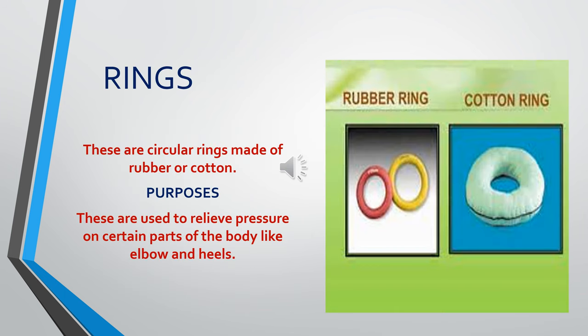Another comfort device is rings. These are circular rings made of either rubber or cotton. Their purpose is to relieve pressure on certain parts of the body, such as elbows and heels. They are basically used under the patient's elbows or knees to prevent pressure sores and to relieve pressure on these areas.